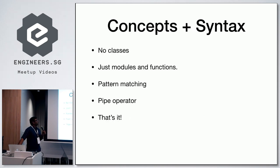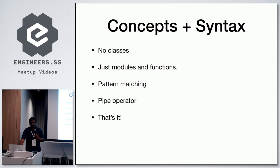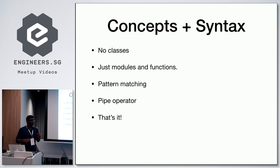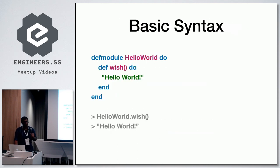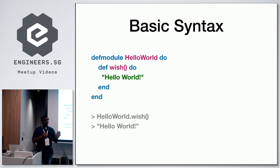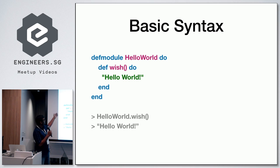Let me start with the concepts. The concepts are pretty simple. Elixir doesn't have any concept of classes. Rather, there are modules and functions. They introduced two new concepts called pattern matching and the pipe operator. These are the key concepts I'm focusing on. There are actually many more details I have missed out simply because of the title, which is a gentle introduction to Elixir. Please feel free to check out the documentation later, but I hope I will allow you to explore the language in a very easy way.